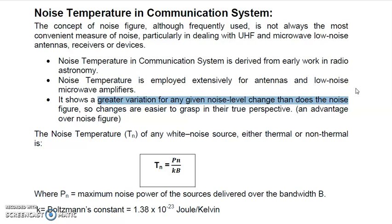Even in applications where there is very low noise, we sometimes still need to reduce that noise further. If the noise cannot be easily configured or identified, we still need to pick it out. Noise temperature shows greater variation for any noise level change — even if the change is of very small value, noise temperature can show a greater variation, and that is its biggest advantage over noise figure.